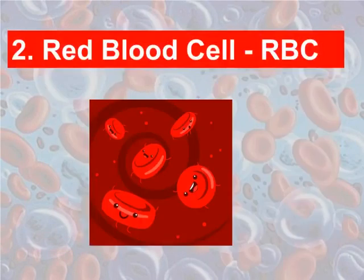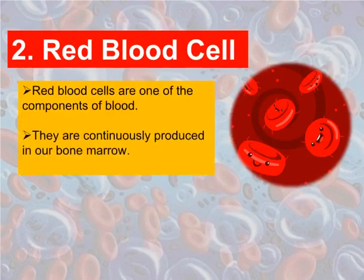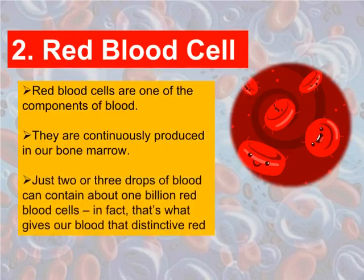The second component of blood is red blood cells, also called RBCs. Red blood cells are one of the components of blood. They are continuously produced in our bone marrow. Just two or three drops of blood can contain about one billion red blood cells — in fact, that's what gives our blood its distinctive red color.